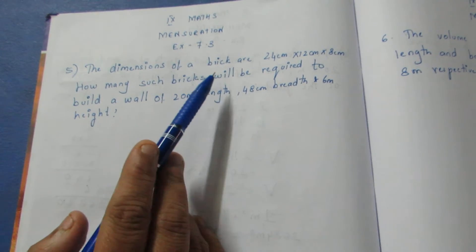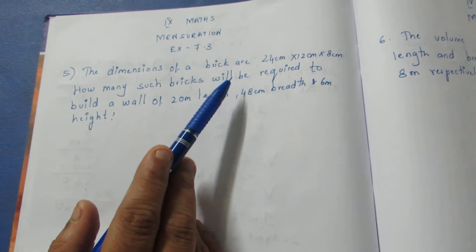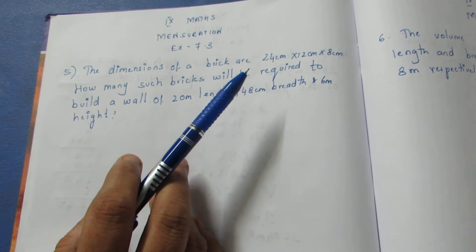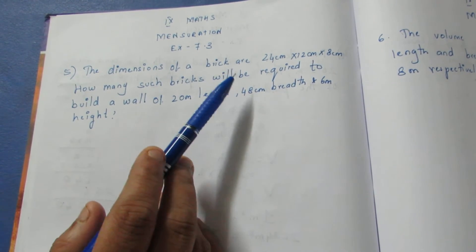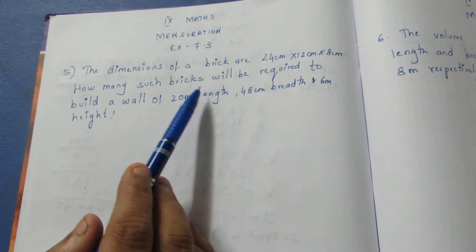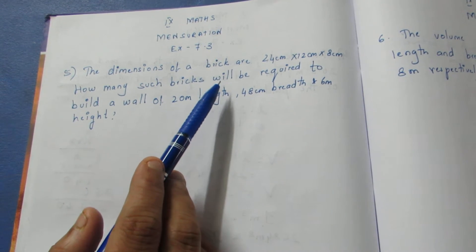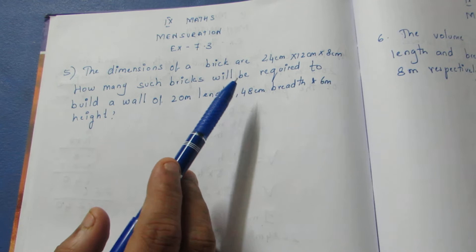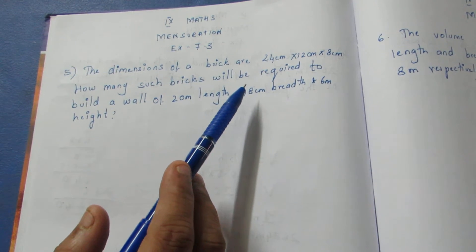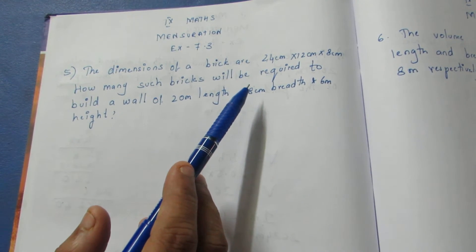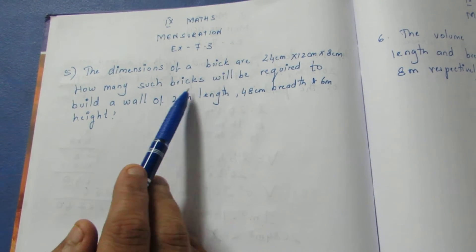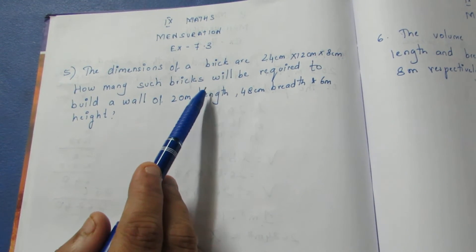So, given the dimensions of a brick, how many bricks are needed to fill the wall of 20 meters in length? What we use is the volume, because the brick occupies space. The wall also occupies space, so we use the volume of each.